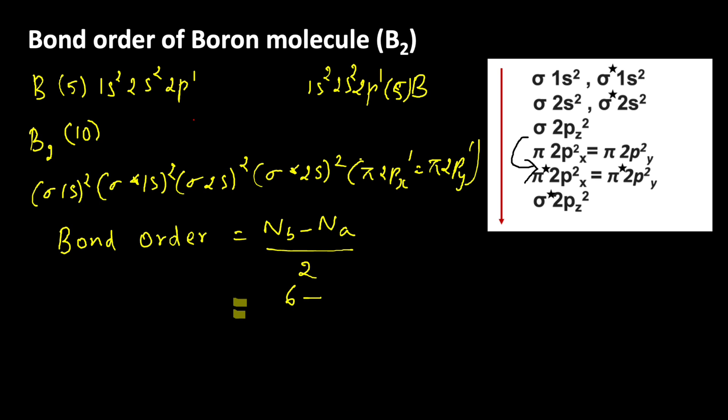6 minus 4 by 2 which is equal to 2 by 2 which gives 1. That means bond order of boron molecule is 1.